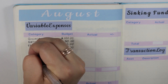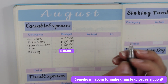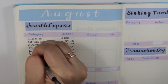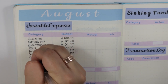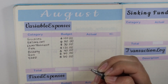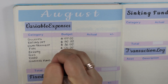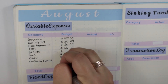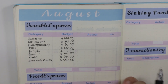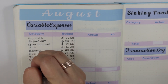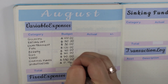Next is beauty, after that is gas, I also have yard money, and sinking funds is going to be listed here — that is going to be $550. I'll go into further detail on the side of the page with the categories. And the last thing is unbudgeted.